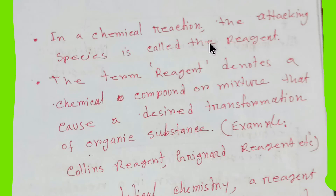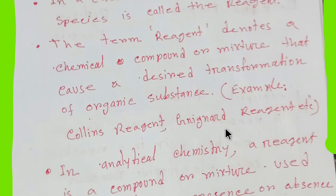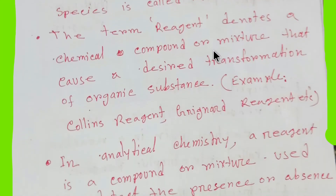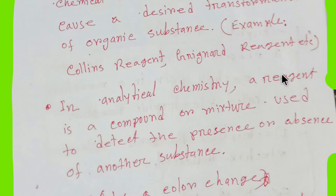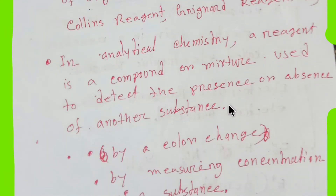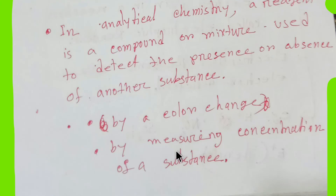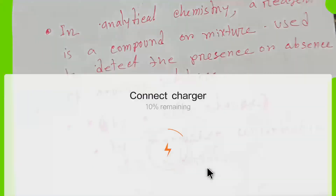Examples of reagents are Collins reagent, Grignard reagent, etc. In analytical chemistry, a reagent is a compound or mixture used to detect the presence or absence of another substance, either by a color change of the reagent or by measuring the concentration of a substance in a solution.